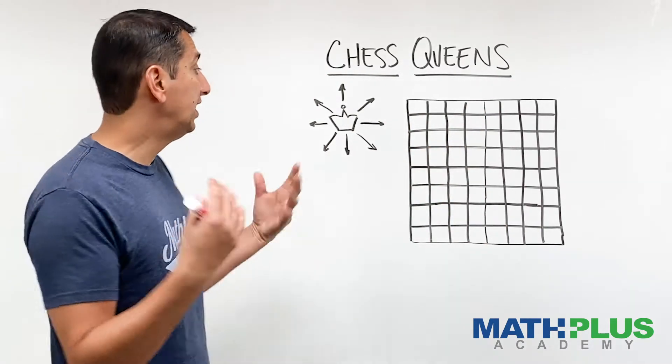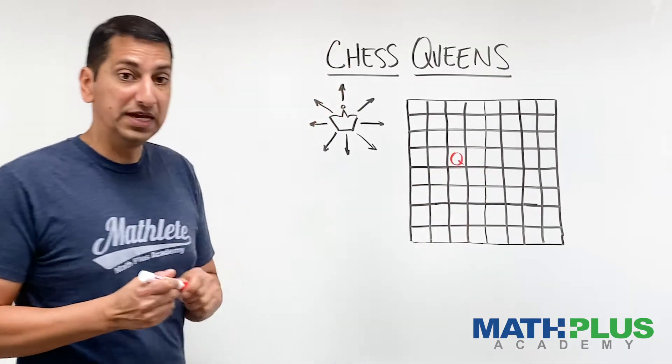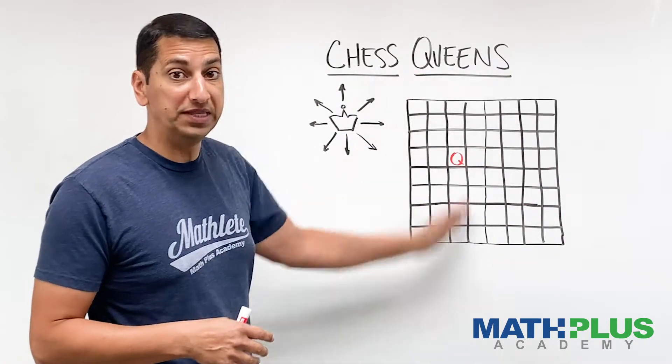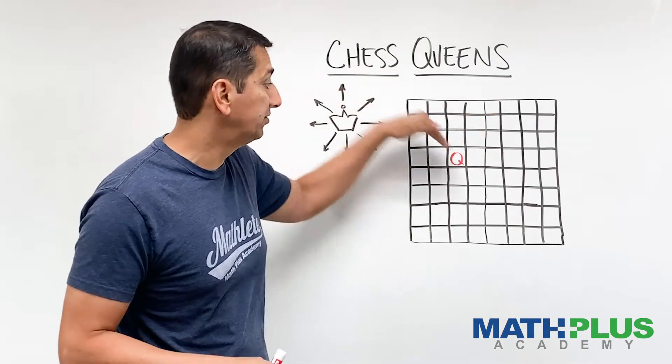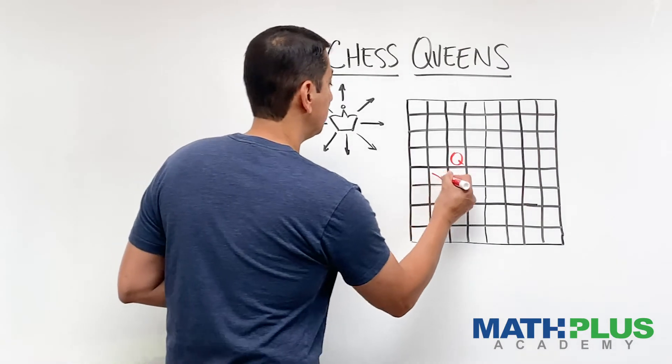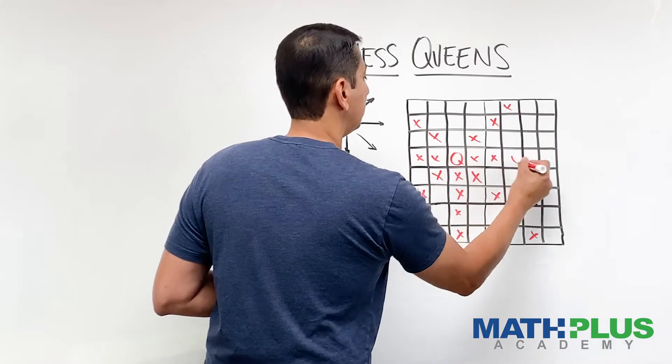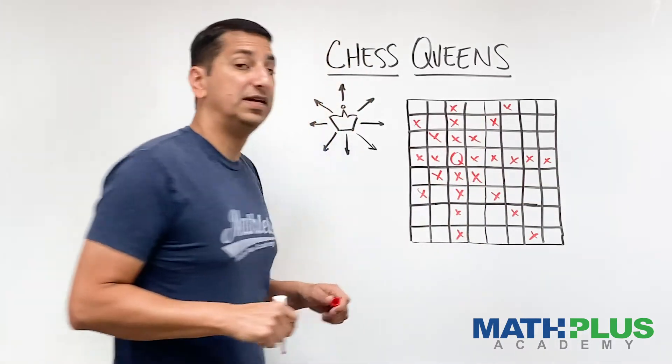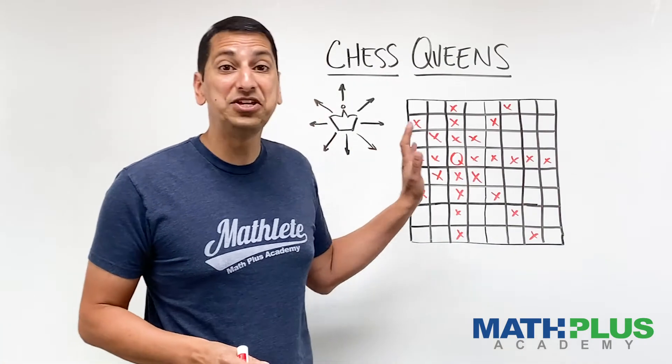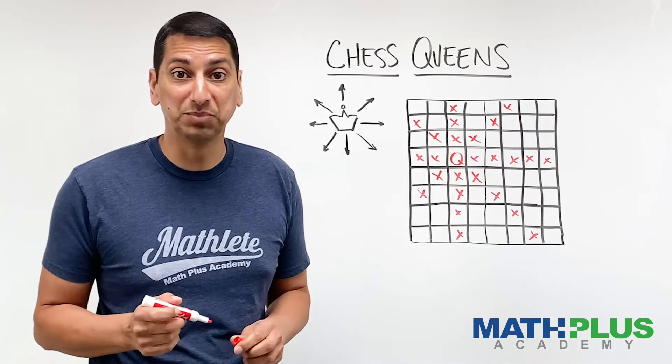So, for example, if I were to place a queen right here, that queen could attack all the squares in the same row, in the same column, on this diagonal, and on that diagonal. So let me go ahead and mark those positions. You can see that a queen has the ability to attack a huge number of squares from any position, sort of near the center of the board.